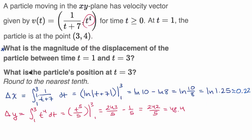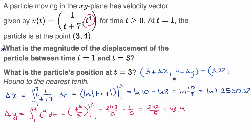From those values we can answer the second part first: what is the particle's position at t equals three? It's the position at t equals one with the respective changes added to each component. So we get three plus 0.22, which is approximately 3.22, and four plus 48.4, which is 52.4. So the position is approximately (3.22, 52.4).